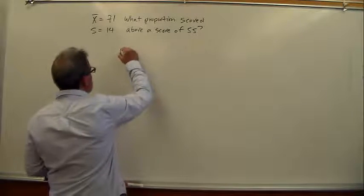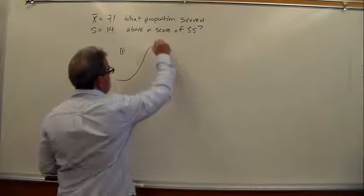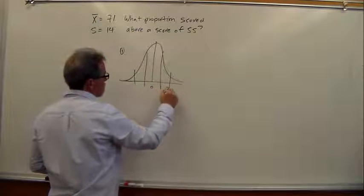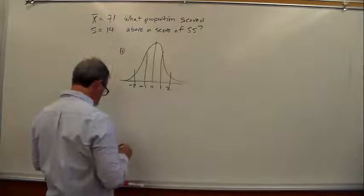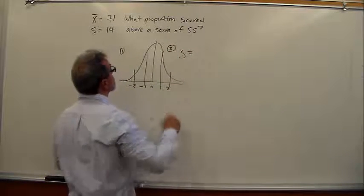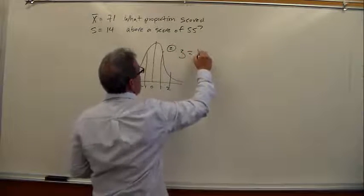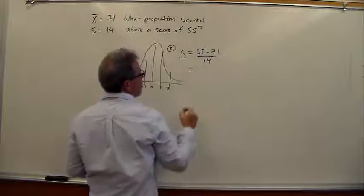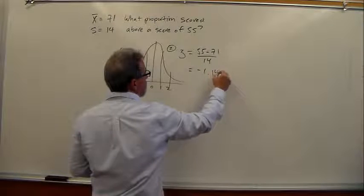Step 1, draw the curve. Step 2, calculate the z. The z turns out to be 55 minus 71 over 14, or negative 1.14.